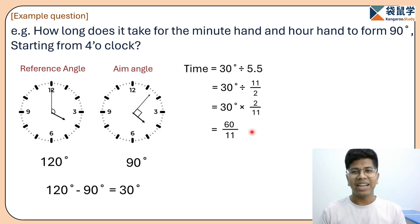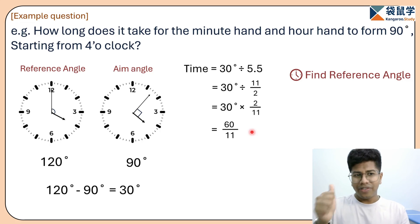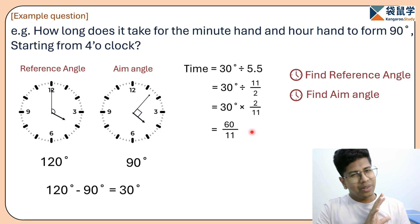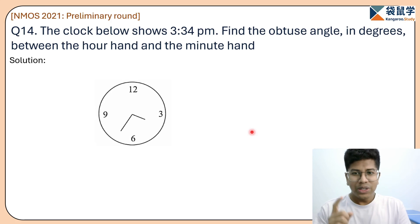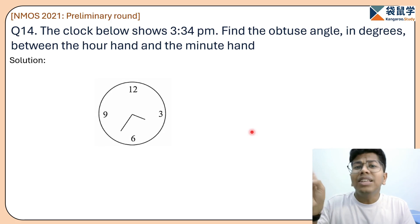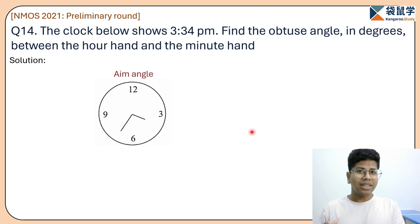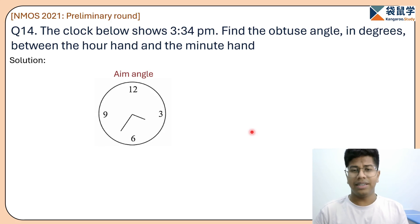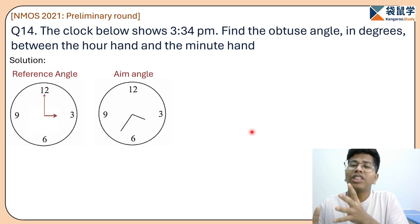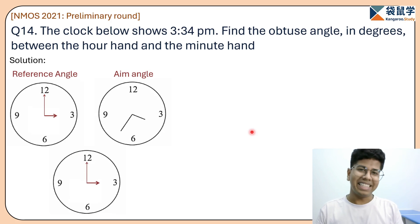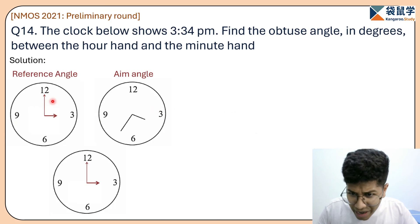Now returning to our original question. The two things we need to look for are the reference angle and the aim angle. In this question, the aim angle is not given — we need to find it. The reference angle we will use is 3 o'clock, because finding the angle at 3 o'clock is very simple: it is just 90 degrees.